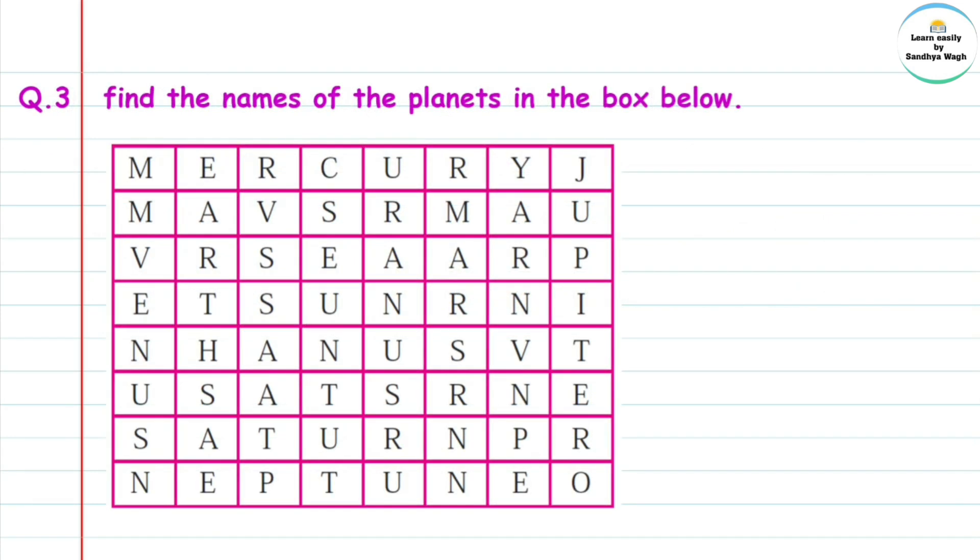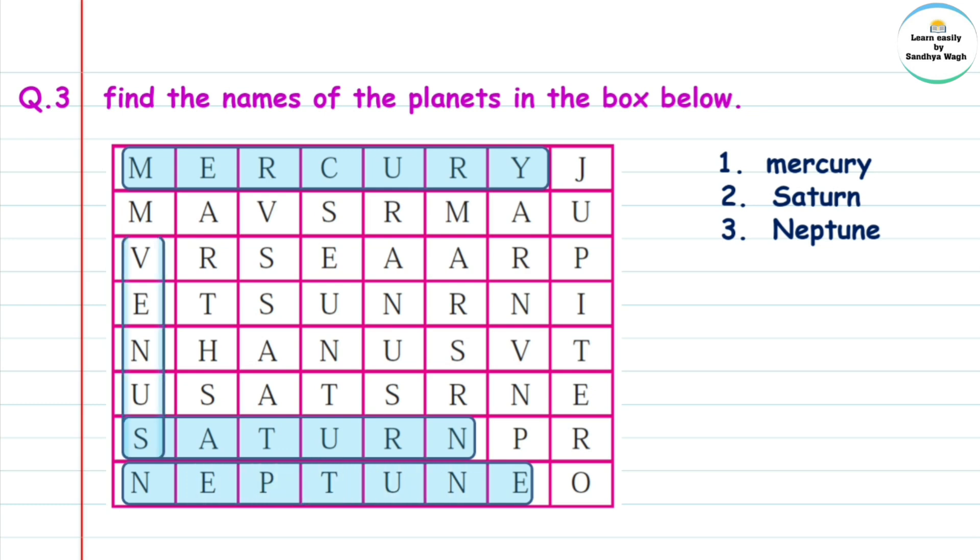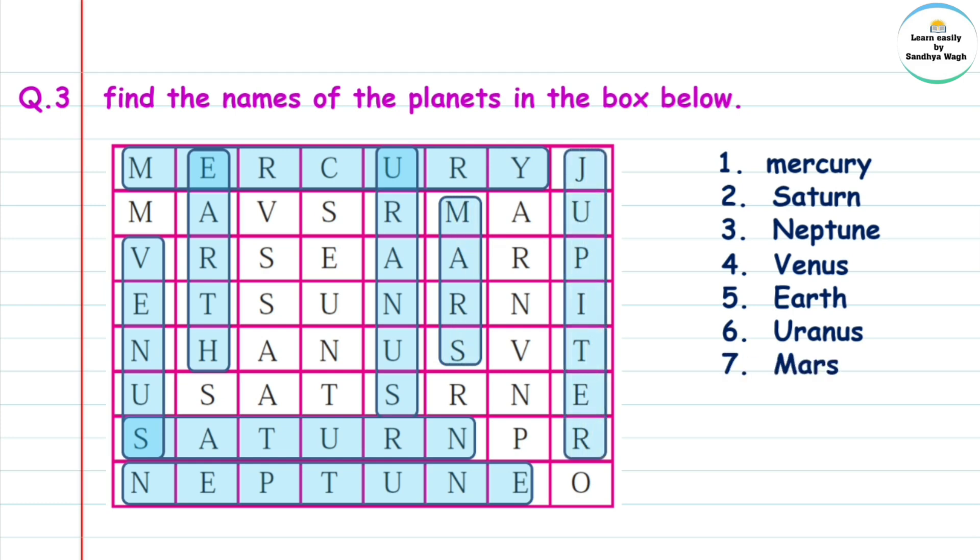Question 3: Find the names of the planets in the box below. The box contains planet names to find. First we have Mercury, second Saturn, then Neptune, Venus, Earth, Uranus, Mars, and last planet Jupiter.